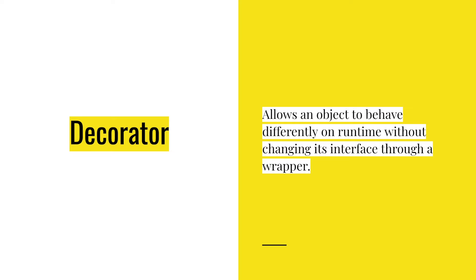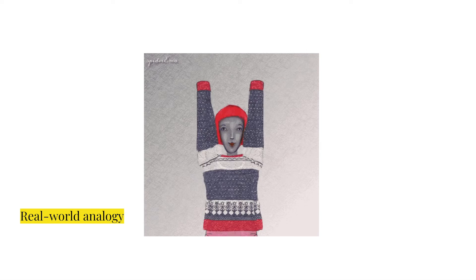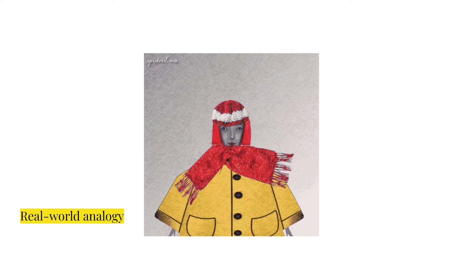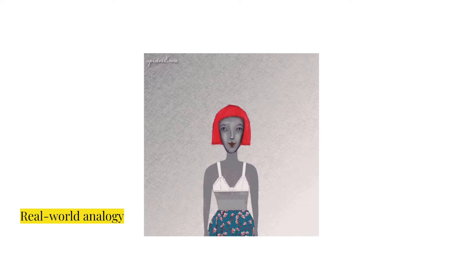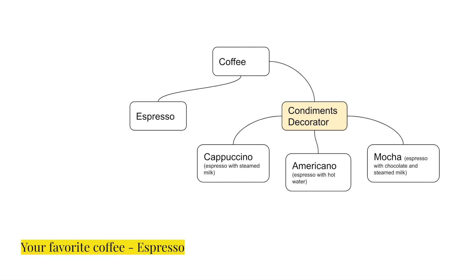The decorator pattern allows an object to behave differently at runtime without changing its interface, through a wrapper. For example, when you're going out in winter, you would normally layer your clothes so you can stay warm and snug. Let's apply the decorator pattern to your favorite coffee, the espresso.